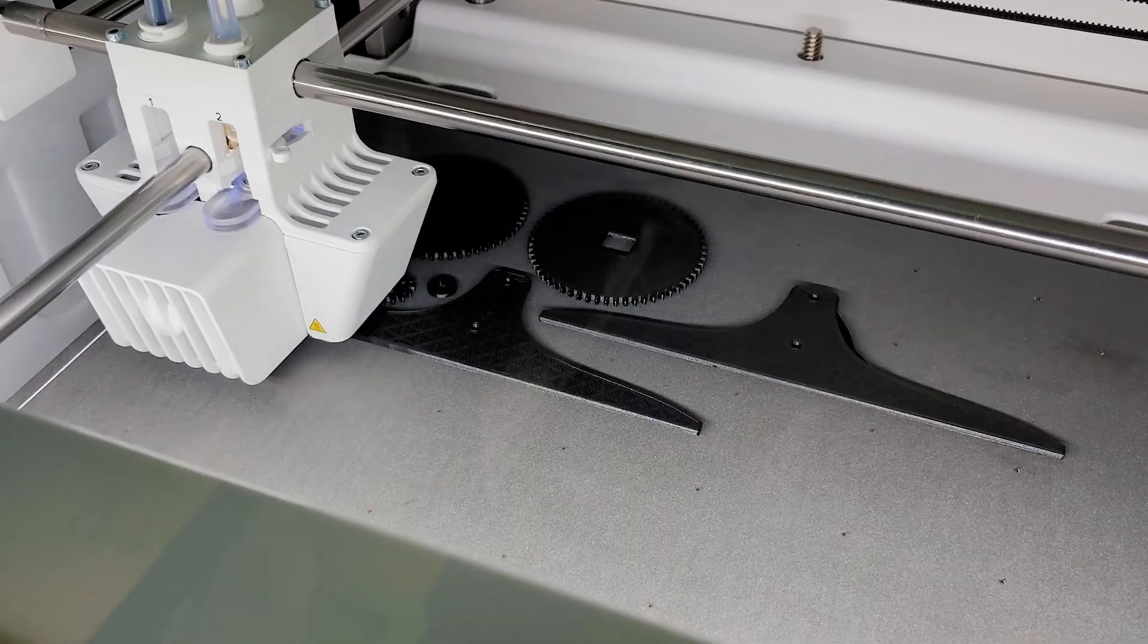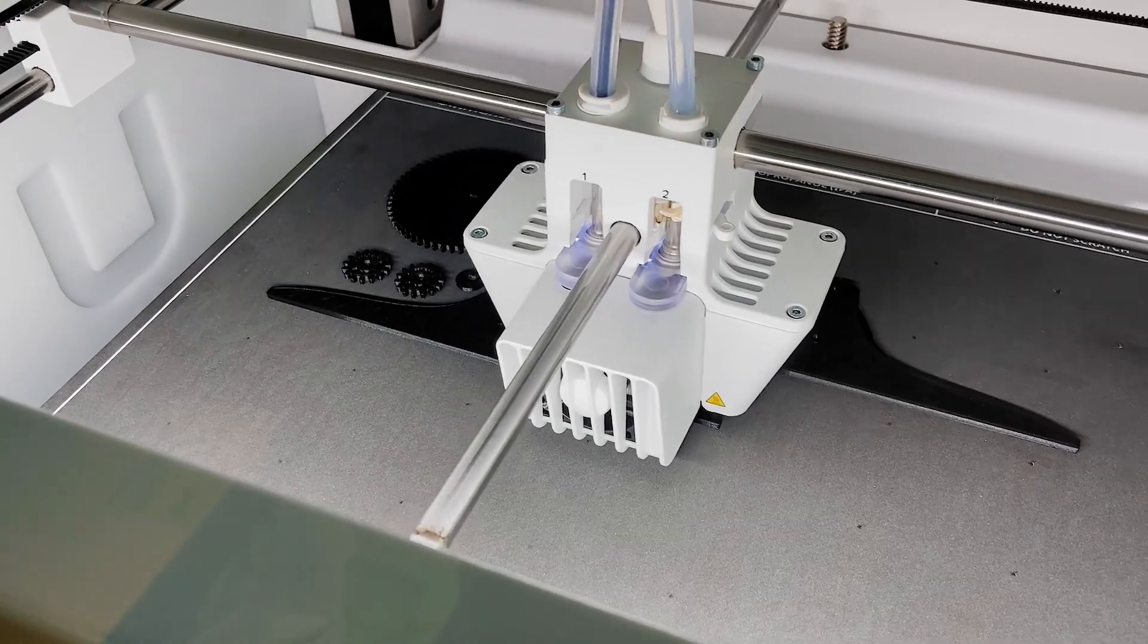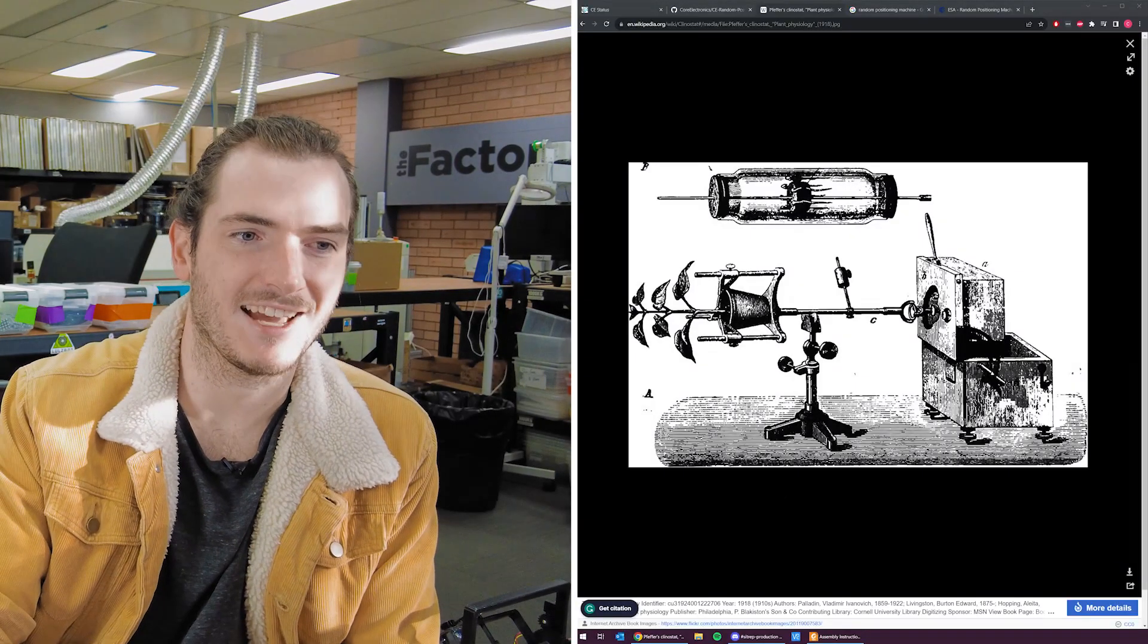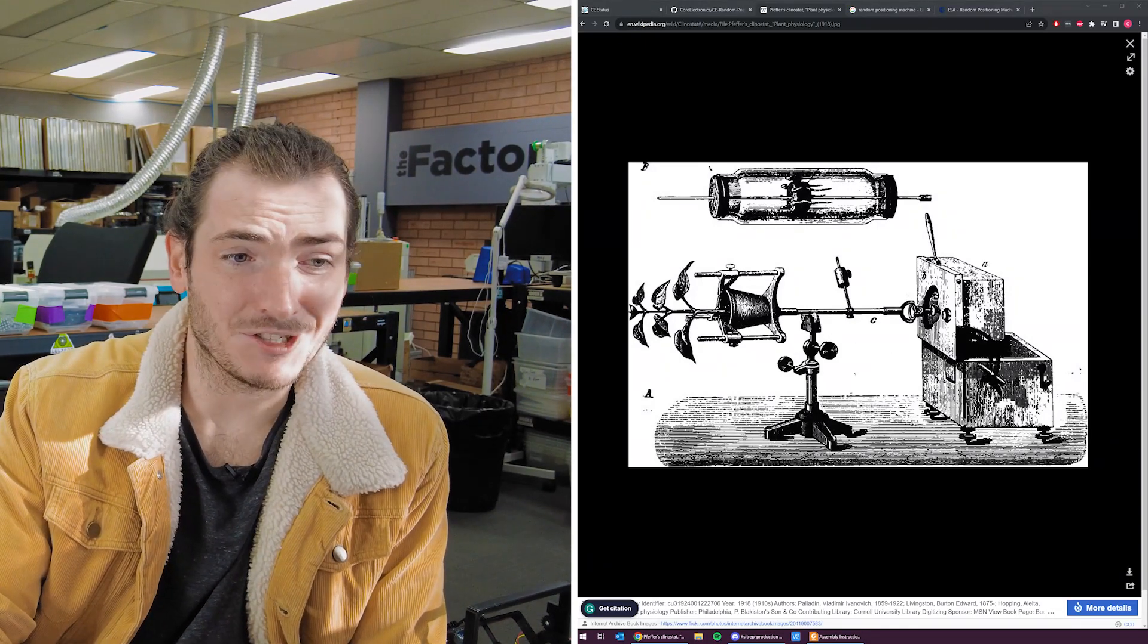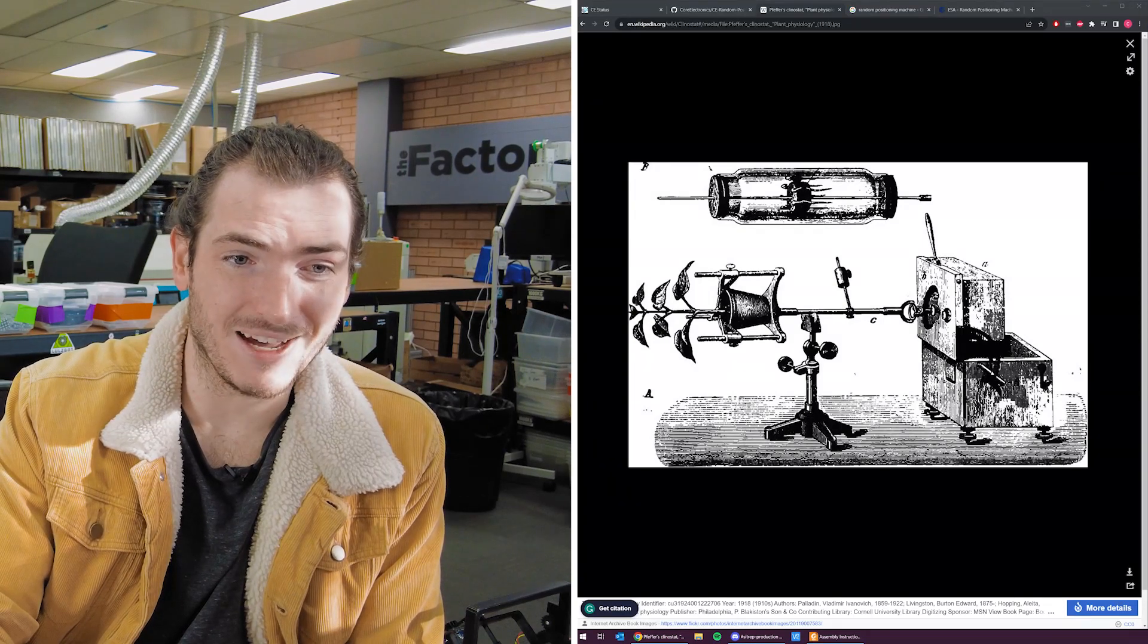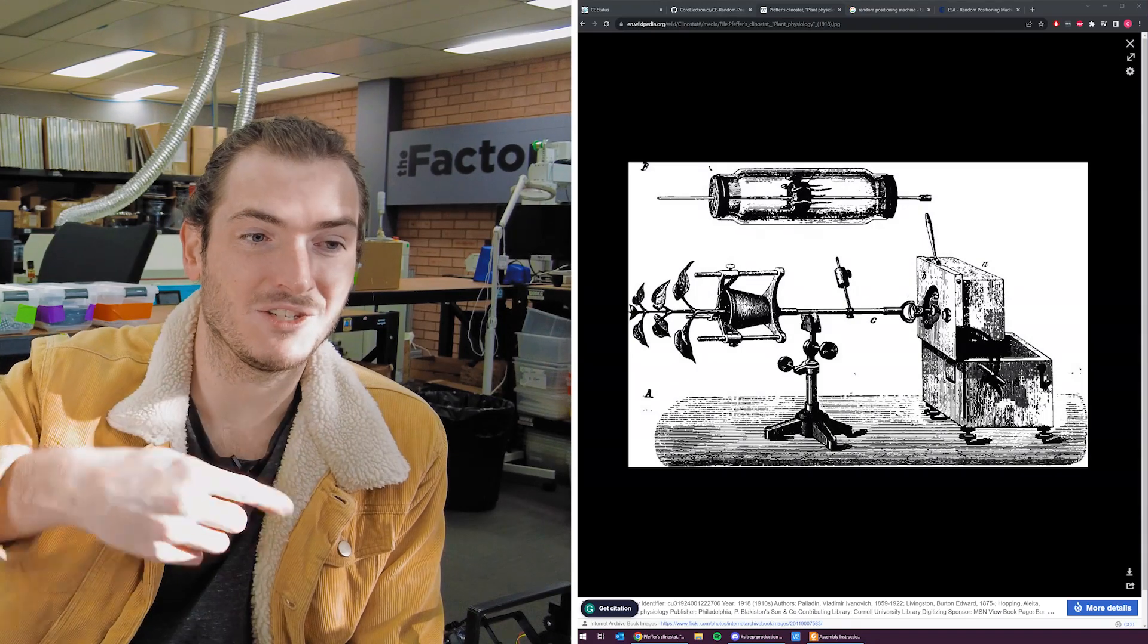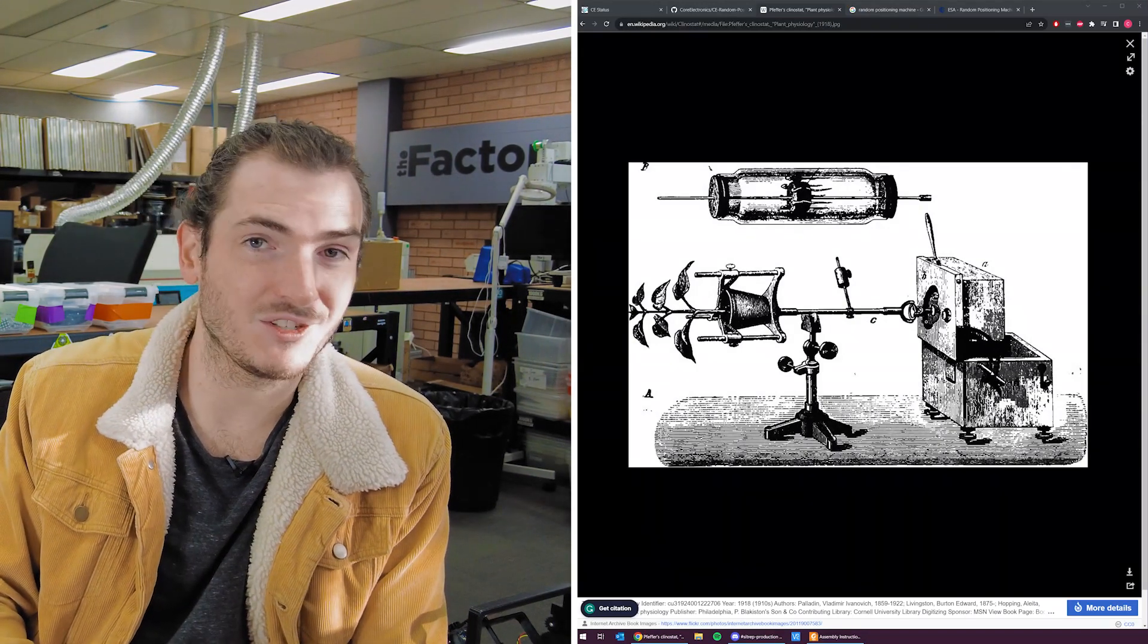So naturally it had to be pretty affordable and had to use technologies that schools can replicate, things like 3D printing. Now we didn't invent this idea. There's a machine called a Clinostat and this looks like the patent diagram for it. And this is essentially a pot plant tipped sideways driven by what looks like a motor. So that will just rotate the plant in one direction and presumably that's good enough for most situations.